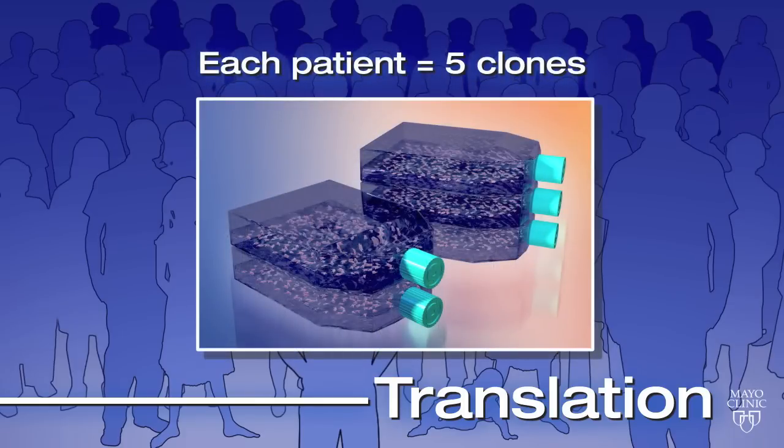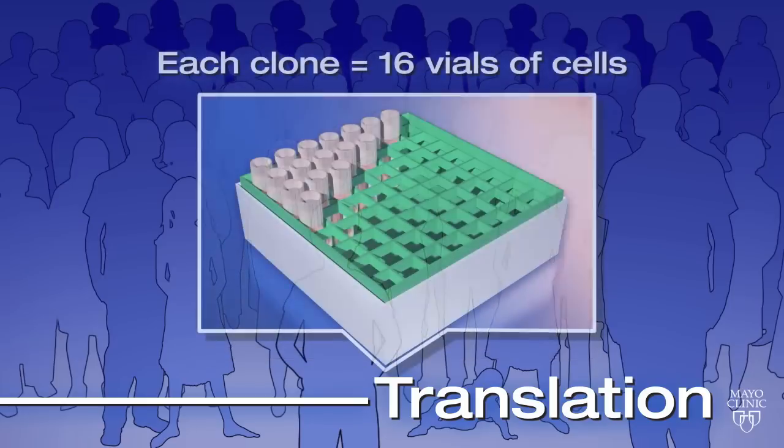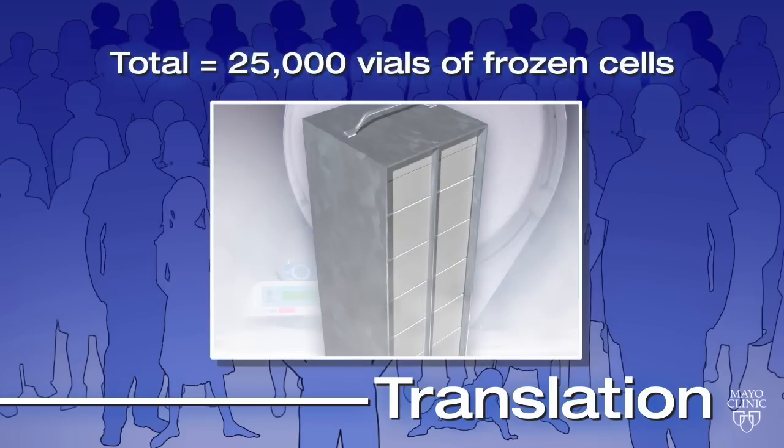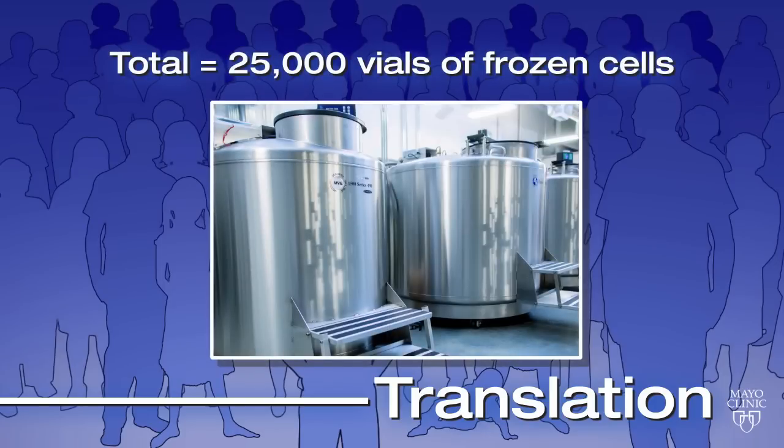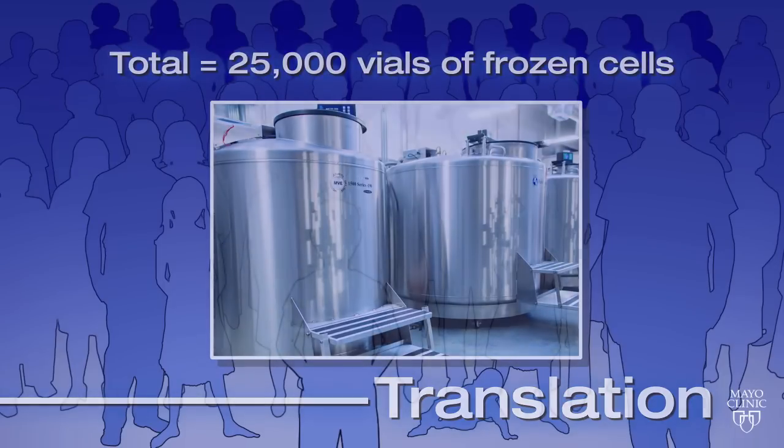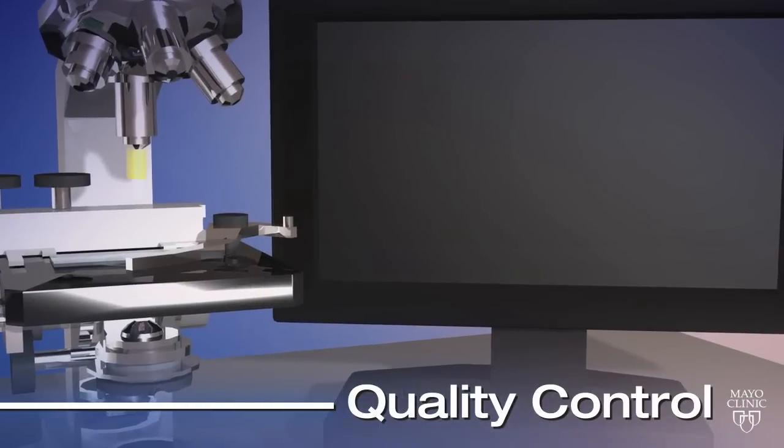Five unique cell lines are produced from each individual and are then expanded into millions of cells. This process is completed by storing the samples with barcodes to track the location of over 25,000 tubes of frozen cells. The cells can be stored for decades.